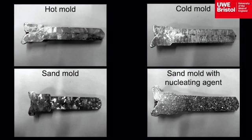In the sand mould that contains a nucleating agent, the grains are very small and uniform in size. The nucleating agent acts like a catalyst around which grain structure can form. The size and amount of agent controls the size and number of grains, and it is a very controlled way of specifying properties.